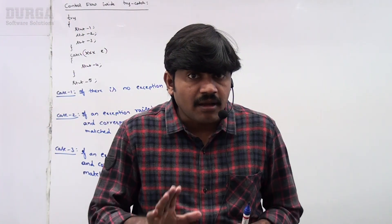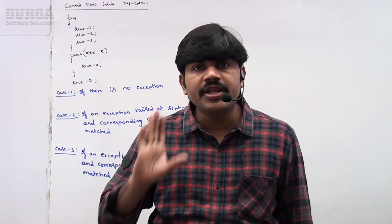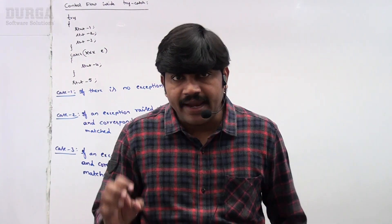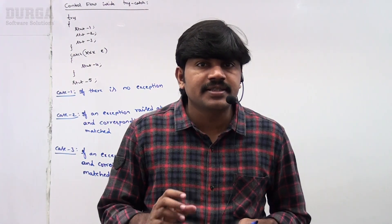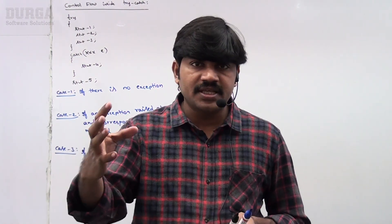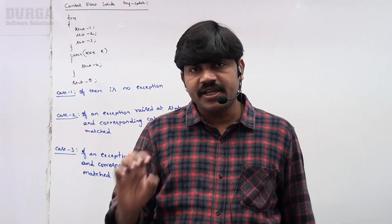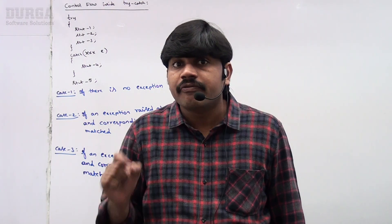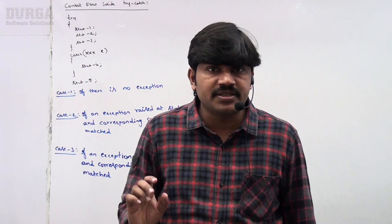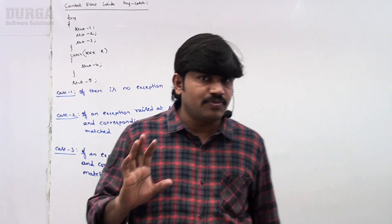Hi friends. In the last video we covered very clearly how to handle exceptions by using try-catch — within the try, risky code; inside catch block we have to write handling code. Now my next topic is very important and very interesting: what is control flow in try-catch block?